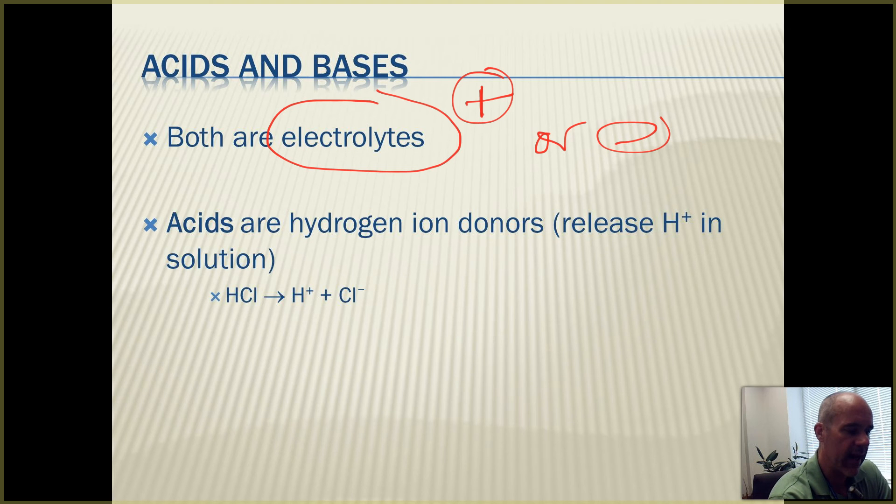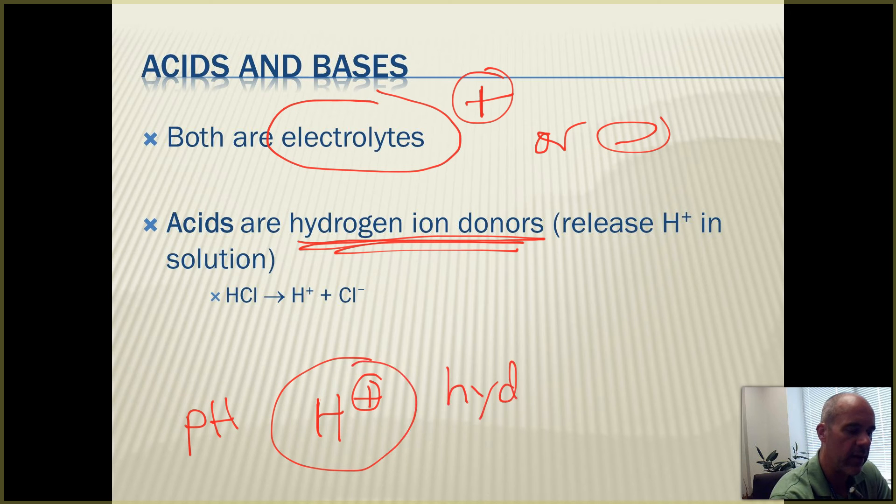Acids, what is an acid? Acids are hydrogen ion donors. When we're thinking about pH and acids and bases, the story really revolves around these guys. These are called hydrogen ions. Hydrogen ions have a positive charge.